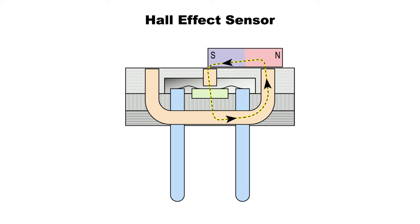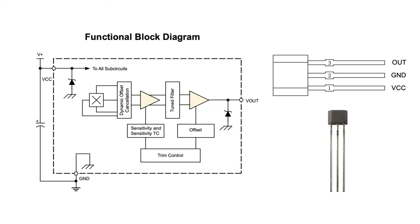Exposed to the other pole of the magnet, the sensor produces the opposite voltage. Within the Hall effect sensor are amplifiers that further increase the intensity of the output signal.